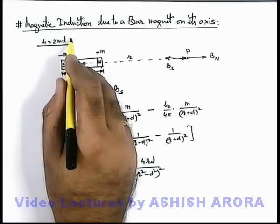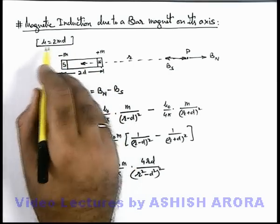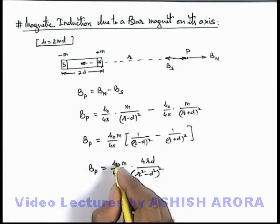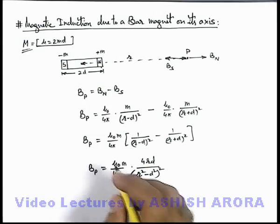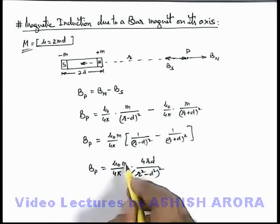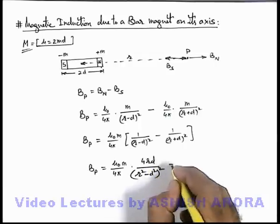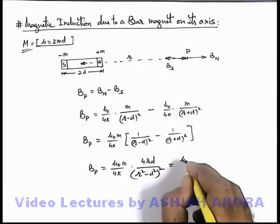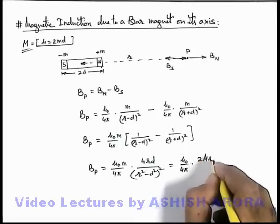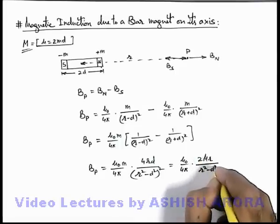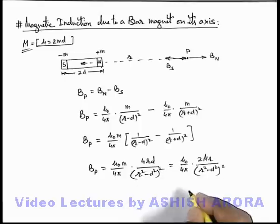We can see that magnetic dipole moment can be written as 2md. To avoid confusion, we can write this magnetic dipole moment as capital M. So 2md we can replace by M, so it can be written as mu_0 over 4π times 2Mr by (r²-d²)².